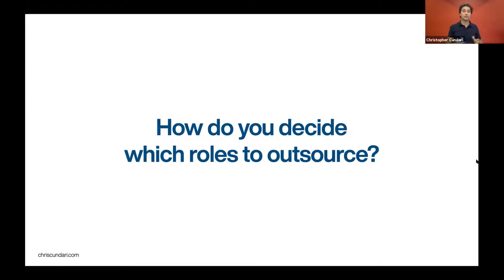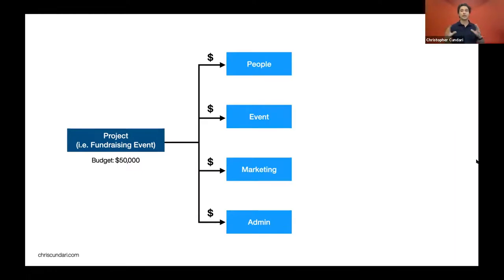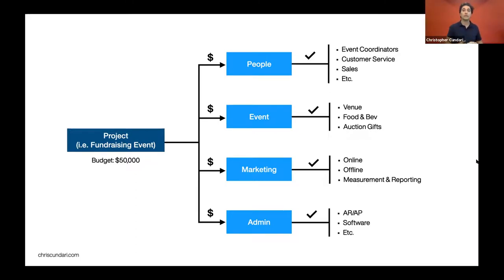So how do you decide which roles to outsource? Let's say you have a project with a $50,000 budget for the year — a fundraising event to raise money for your nonprofit. Breaking that down, there's money going to people, to the event itself, to marketing, and to admin. Breaking it down further: people includes event coordinators, customer service, and sales. The event includes the venue, food and beverage, and auction gifts. Marketing includes online and offline — measuring and reporting everything, making sure you're reaching your fundraising goals. And admin includes accounts receivable and payable, software, et cetera. You have all these expenses and moving pieces within one project that you have to budget for.